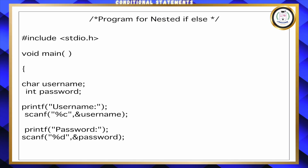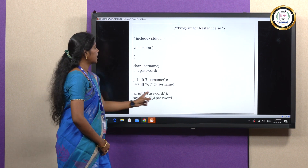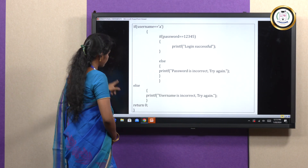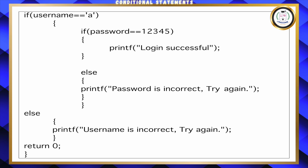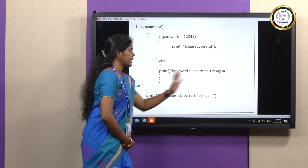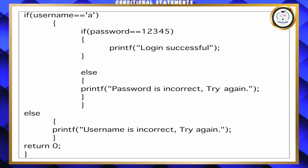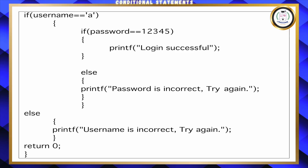This is an example for the nested if-else statement. Under the main function, I am using a character variable called username and an integer variable called password. Using printf and scanf, I am getting the username and password from the user. If the username equals 'a', the program enters the next condition; otherwise, the else part executes with 'username is incorrect, try again.' If the username is 'a' and the password is 12345, it prints 'login successful.' If the password is wrong, 'password is incorrect' will be executed.